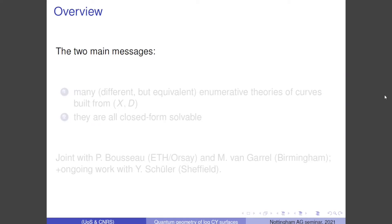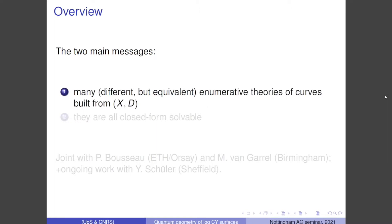Regarding the first half of the title, quantum geometry is often code for looking at enumerative invariants of curves inside X. I will be looking at moduli spaces of curves in X that somehow feel the geometry of D. I have two main messages: first, there are several enumerative theories of curves built from the geometry of X and D which have rather different flavors; but the main point is that they are nonetheless equivalent in a well-defined way, and moreover, they're all closed-form solvable.